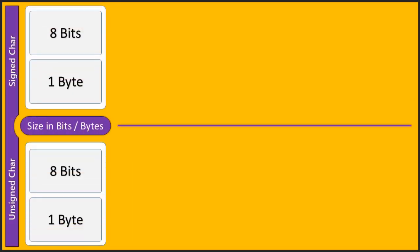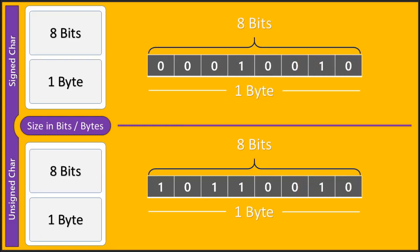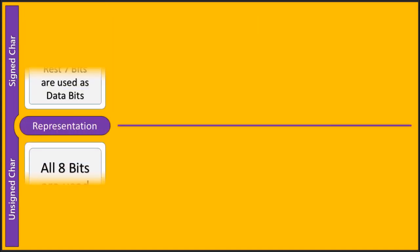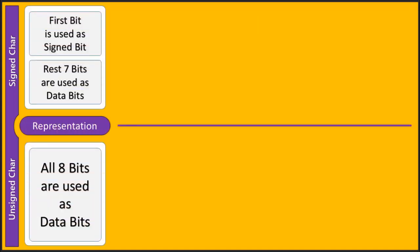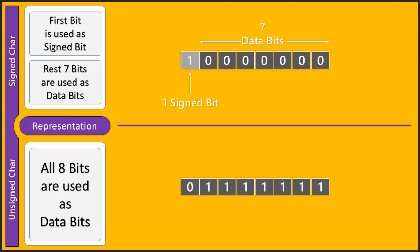Both signed and unsigned characters require 8 bits, i.e. 1 byte of memory, to hold one character. In signed char, the most significant bit is used as the sign bit whereas the remaining 7 bits are used as data bits. In unsigned character, all 8 bits are used as data bits.